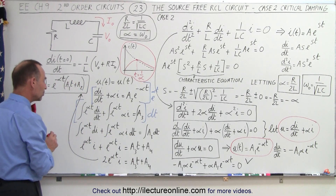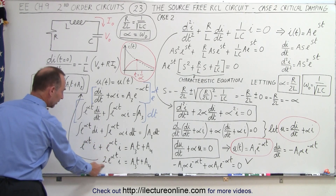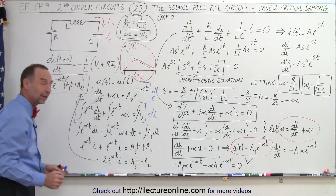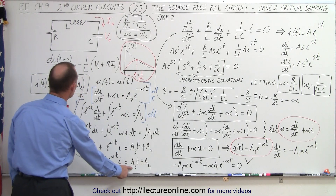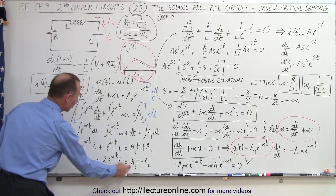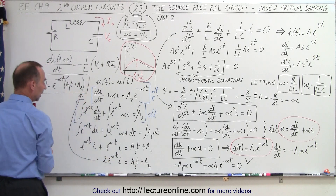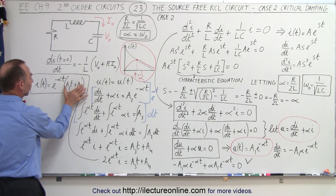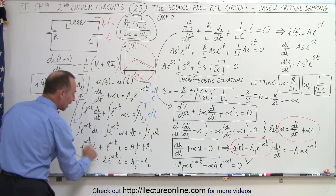Now we realize that certain terms are exactly the same — there are two of them, so we add them together. On the right side we still have A₃t plus A₄. Then if we divide both sides by 2, we come up with new constants: instead of A₃ over 2 we have A₁, and instead of A₄ over 2 we have A₂. So on the right side we now have A₁t plus A₂, and on the left side we have e to the alpha t times i.